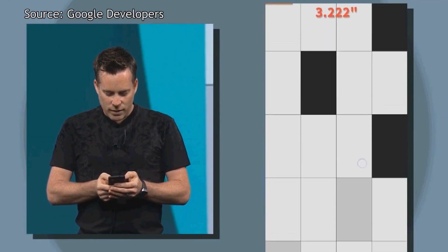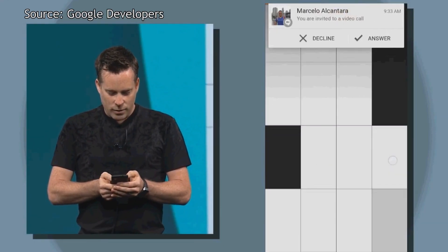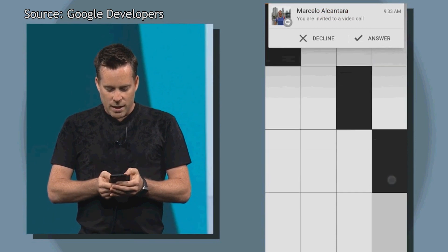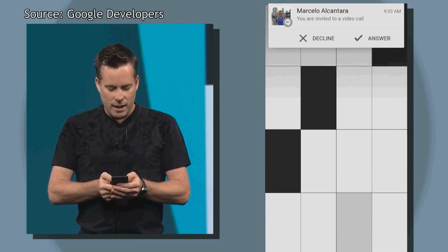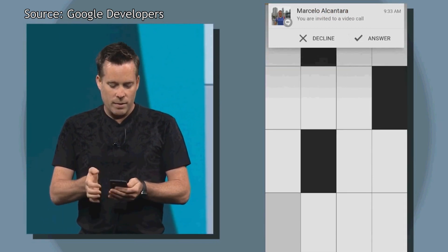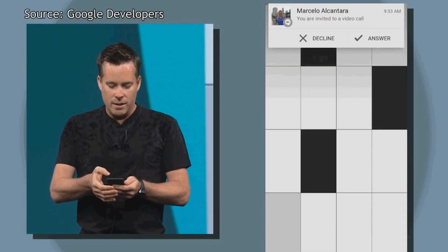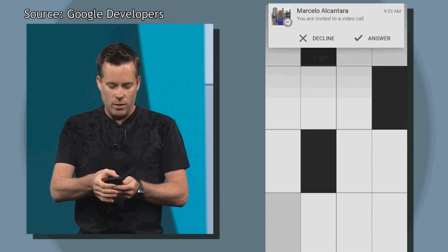There's a new way notifications will be displayed in Android L, and that's using their new heads-up notification. With heads-up notification, depending on the app developer, when the app receives a notification, it will display in its own floating window, similar to what we see in Paranoid Android, Hover, and in iOS.